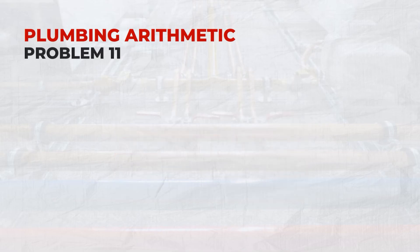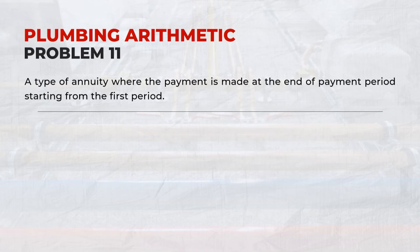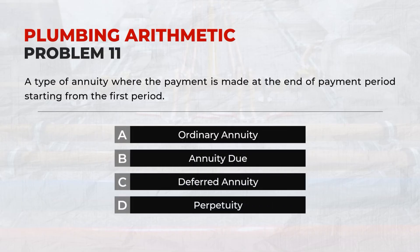A type of annuity where the payment is made at the end of the payment period starting from the first period: A. Ordinary Annuity.